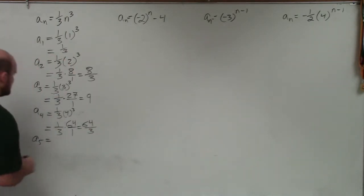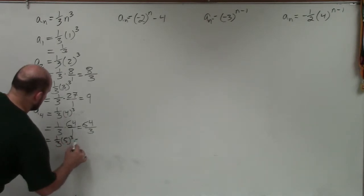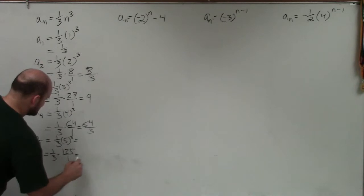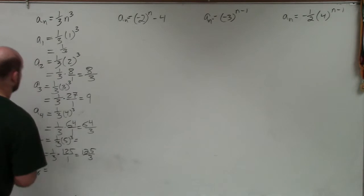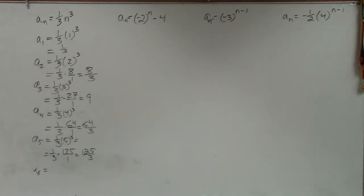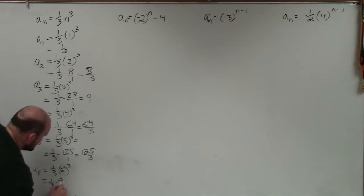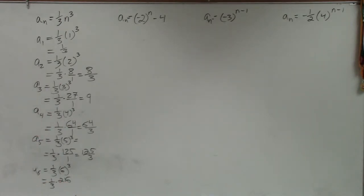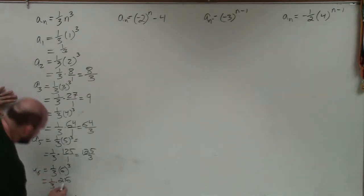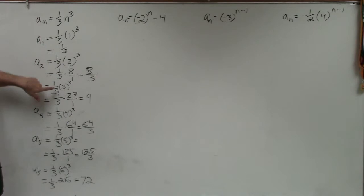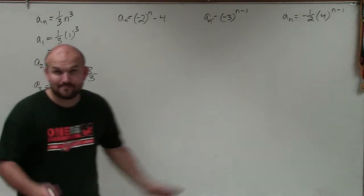A sub 5 is going to be 1 third times 5 cubed, which equals 1 third times 125. That does not simplify either, so we just get 125 over 3. And then a sub 6 equals 1 third times 6 cubed, equals 1 third times 216. That does divide evenly — 216 divided by 3 equals 72. So there's your first six terms: 1 third, 8 thirds, 9, 64 over 3, 125 over 3, and 72.